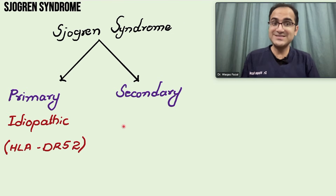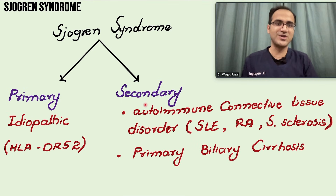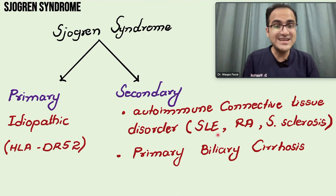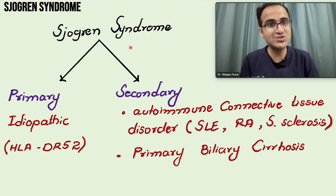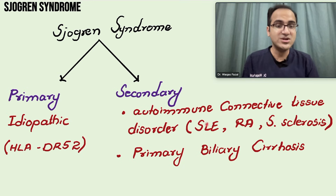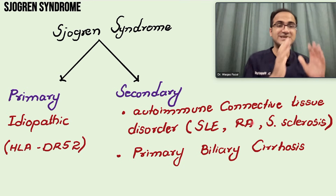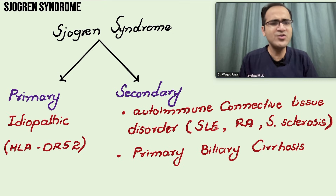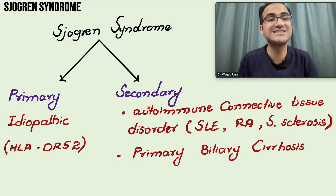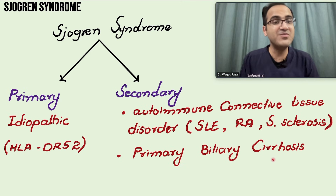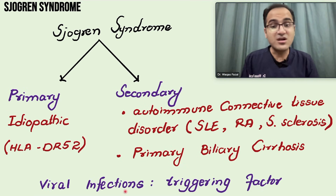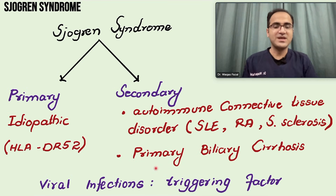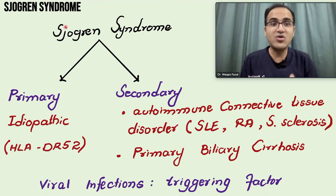Secondary Sjögren's is when it is associated with another disease. In SLE and systemic sclerosis, it is sometimes associated with Sjögren's syndrome — dry mouth and dry eyes — because SLE, rheumatoid arthritis, and systemic sclerosis are autoimmune diseases with antibodies that attack the body and can result in secondary Sjögren's. It is also associated with primary biliary sclerosis. Viral infections such as HIV and Epstein-Barr virus are known to trigger Sjögren's syndrome.